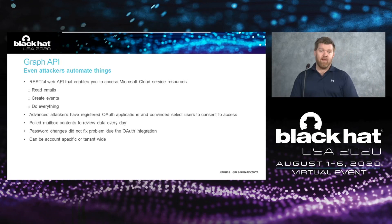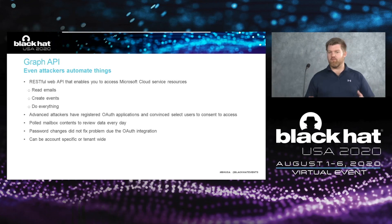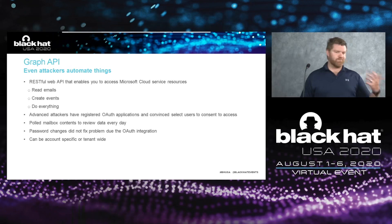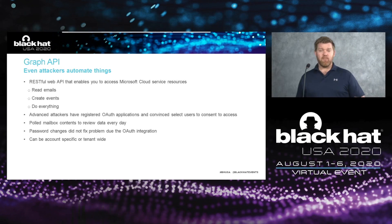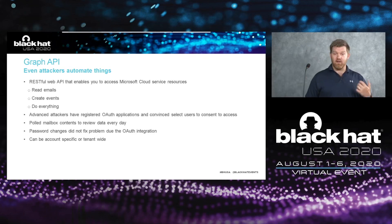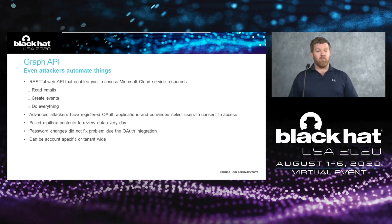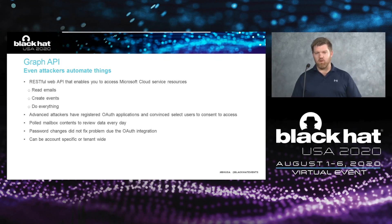Attackers like to automate things as well. We have seen attackers leverage the Graph API — a RESTful web API that enables administrators to access Microsoft cloud services and their resources. You can read emails, create events, administer users, effectively do everything. Advanced attackers have registered OAuth applications and convinced users to consent to access. We've also seen them consent to tenant-wide admin access. Because password changes don't remove OAuth applications, attackers can maintain their persistence in the environment and make API requests to read your mailbox, search your documents, and download your OneNote files, updated contracts, or secret project development information — all through a web API proxied from anywhere in the world with no need for multi-factor authentication.